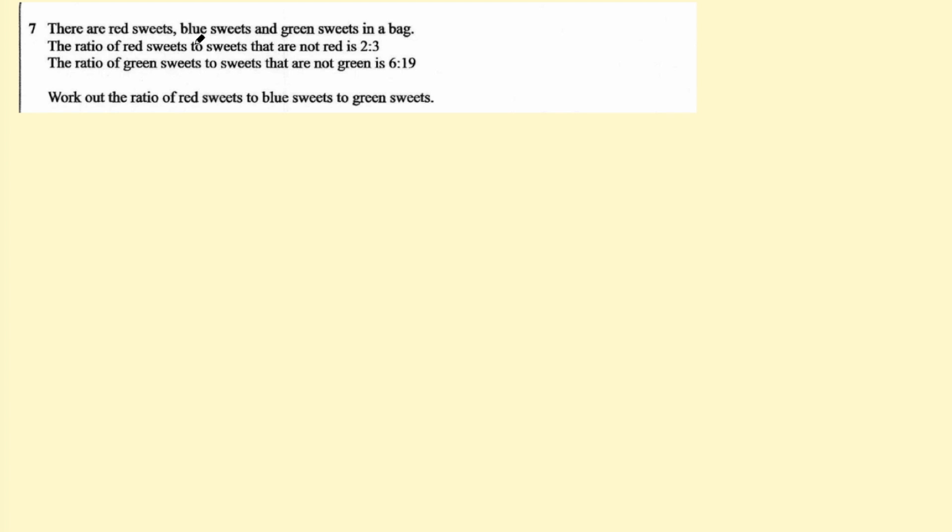It says there are red sweets, blue sweets, and green sweets in a bag. The ratio of red sweets to sweets that are not red is two to three. The ratio of green sweets to sweets that are not green is six to 19. Work out the ratio of red sweets to blue sweets to green sweets.